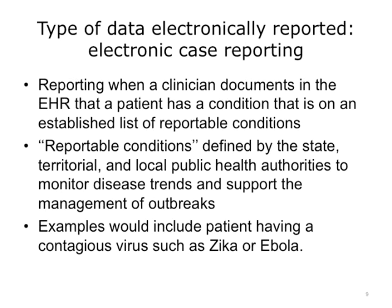Another type of data electronically reported is electronic case reporting. Electronic case reporting to public health authorities is triggered when a clinician documents in the EHR that a patient has a condition that is on an established list of reportable conditions. The current list of reportable conditions is defined by the state, territorial, and local public health authorities to ensure that they monitor disease trends and support the management of outbreaks. Examples of notifiable conditions would include patients having a contagious virus, such as Zika or Ebola.